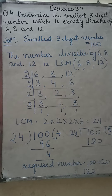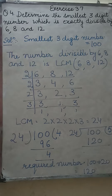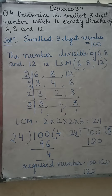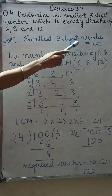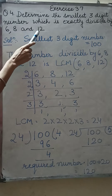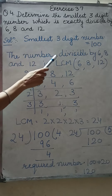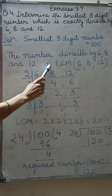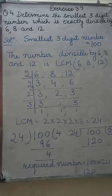Question number 4: determine the smallest 3-digit number which is exactly divisible by 6, 8, and 12. That 3-digit number we have to find. Now the smallest 3-digit number is 100, but 100 is not divisible by 6 and 12. So first we find the least common multiple of 6, 8, and 12. The number divisible by 6, 8, and 12 is the LCM of 6, 8, and 12.